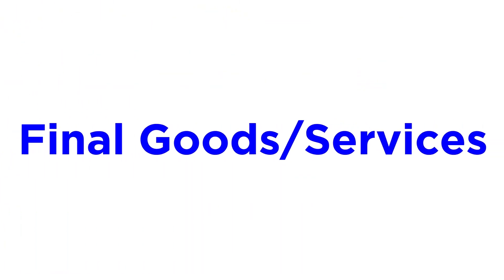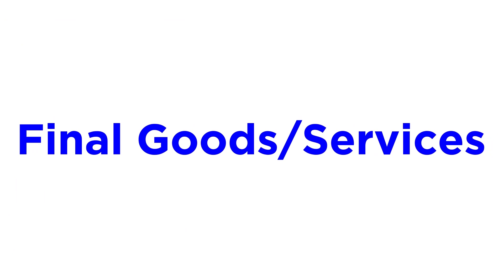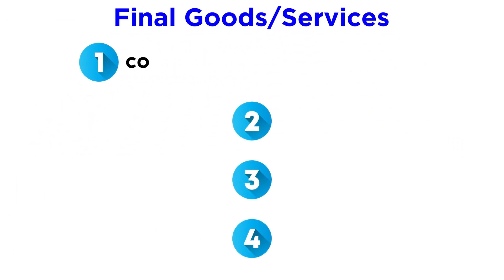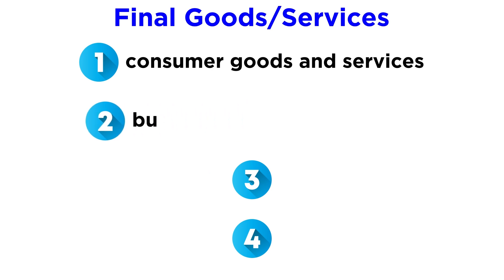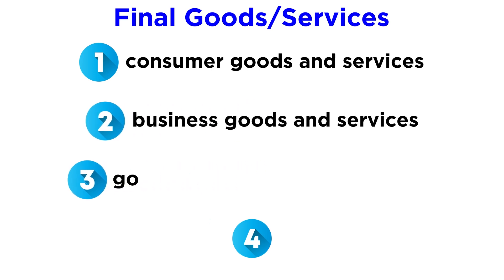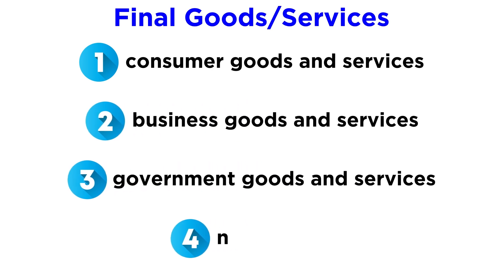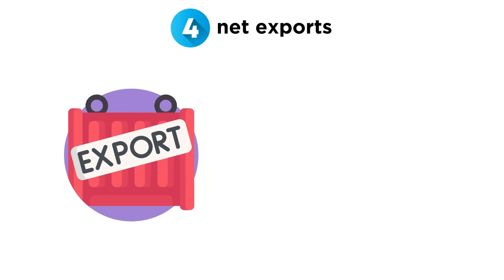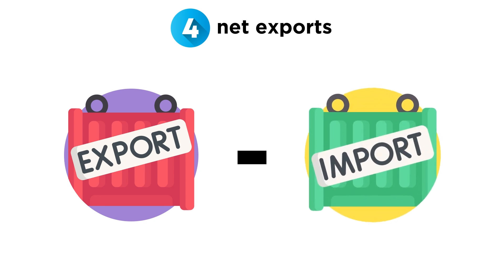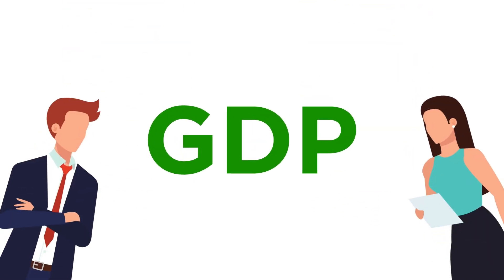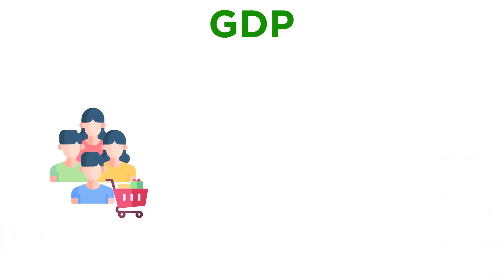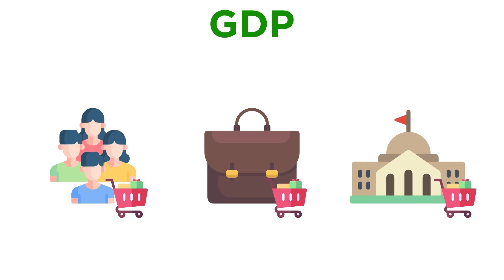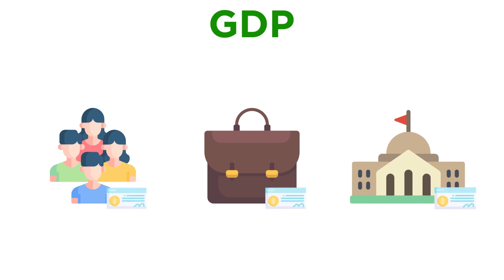Government economists often divide final goods and services into four categories: consumer goods and services, business goods and services, government goods and services, and net exports. Net exports are found by simply adding up exports and subtracting imports. Government economists can also calculate GDP using another method — instead of adding up all the stuff that consumers, businesses, and the government buy, it can add up all the incomes in the economy.